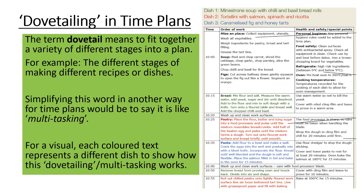Another thing: dovetailing. Dovetailing means to fit together a variety of different stages into a plan — within food it's more to do with multitasking. For example, if you look at dish one, dish two, and dish three in different colours on the time plan, you can see they've made bread for basil bread rolls for minestrone soup, cleaned down, gone on to pastry for tortellini, then pasta, then the caramelized fig and honey tarts — that's dovetailing, basically multitasking within your time plan.